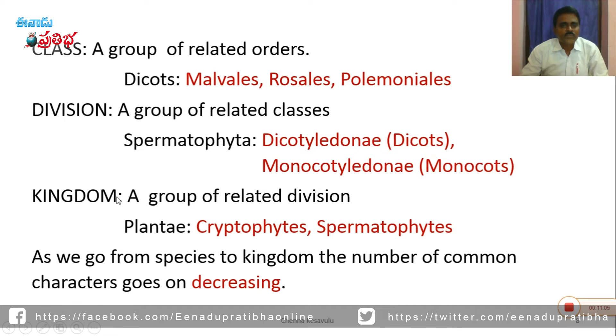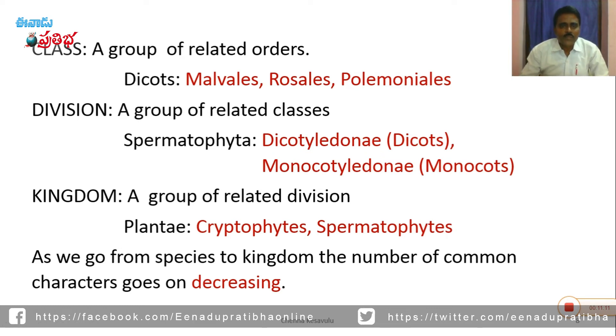Next is kingdom. A group of related divisions is called a kingdom. We have cryptogams and spermatophytes grouped together under the plant kingdom.